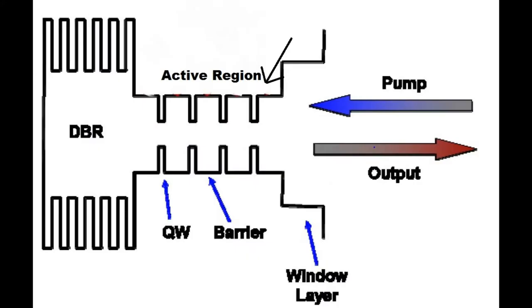The active region is composed of multiple quantum wells separated by barriers. The potential wells contain discrete energy states formed when semiconductor materials are layered to form the VECSEL.